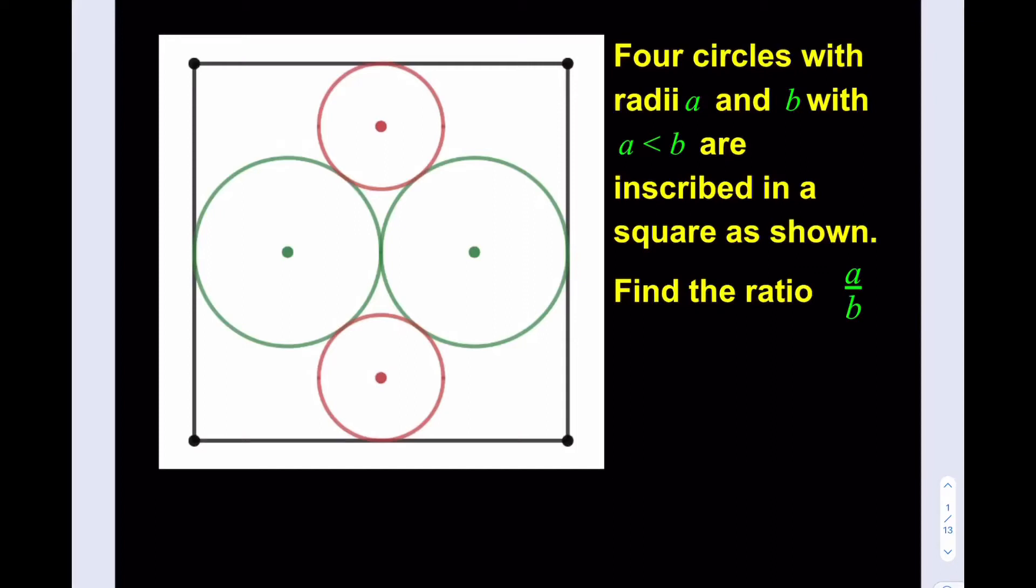Hello everyone. In this video, we're going to be solving a geometry puzzle. Four circles with radii a and b with a less than b are inscribed in a square as shown. Find the ratio a to b.